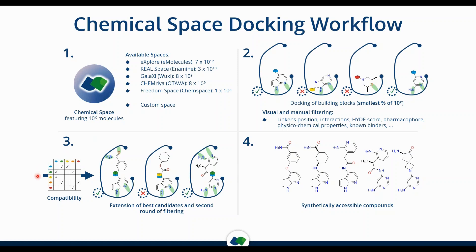For example, if we only have one hydrogen bond interaction instead of two, we might not consider that building block. If everything seems fine and there's enough space to grow, we consider both building blocks for follow-up. In step three, we check compatibility of building blocks with each other, then enumerate the sub-libraries to see what compounds can be made with the best fragments. We then do a second check — filter, dock, and score them, selecting the best candidates. If something does not contribute to binding affinity, those building blocks are discarded.